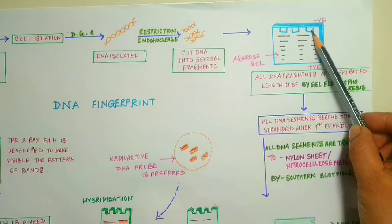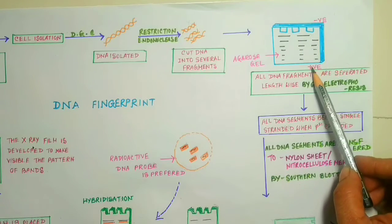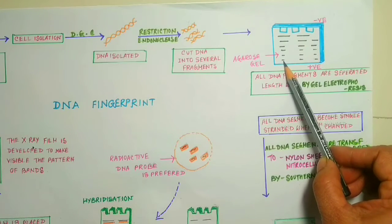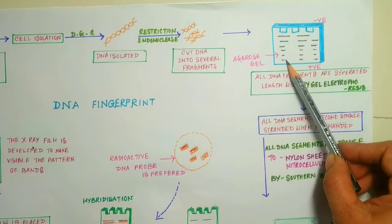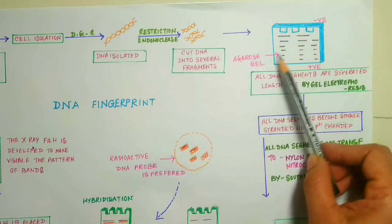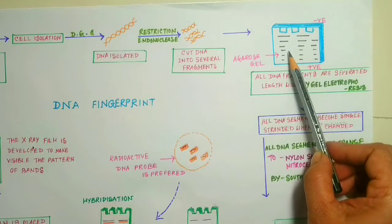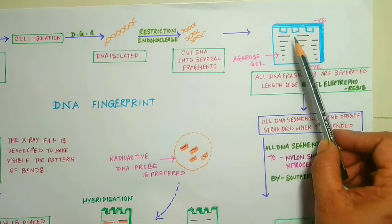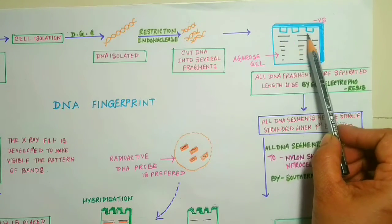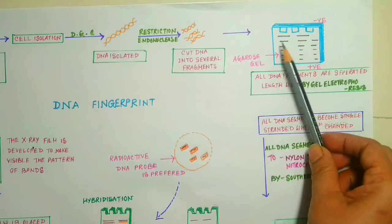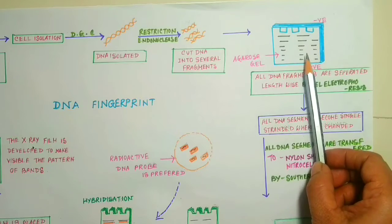Since DNA molecules are negatively charged, they move towards the positive side. Under the force of electric field, since the shorter length of DNA has lighter weight, they can move faster. Finally, they are arranged like this—shorter DNA are arranged in the first line, and the longer DNA strands are arranged in the last line. They are arranged according to their length.